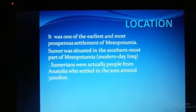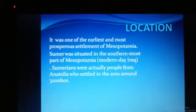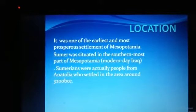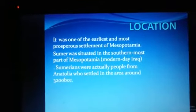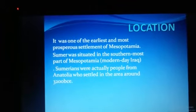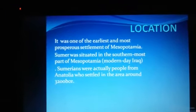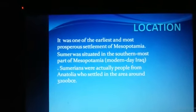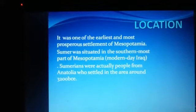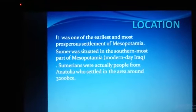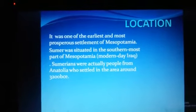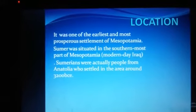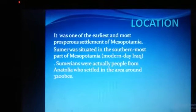Students, this civilization was one of the most earliest and most prosperous settlements of Mesopotamia. Sumerians were situated in the southernmost part of Mesopotamia, which today is known as Iraq. Sumerians were actually people from Anatolia who settled in the area around 3200 BCE, meaning they originally belonged to Anatolia and later settled in Mesopotamia, which is today known as Iraq.